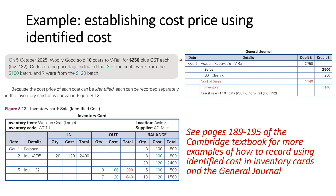Here's one example from pages 189 to 195 of the Cambridge textbook. On the 5th of October, Woolly Good sold 10 coats for $250 plus GST each. The codes on the price tags indicated that three of the coats were from the $100 stock and seven of them were from the $120 stock. So we need to record three items as being from the $100 stock and seven items from the $120 stock.